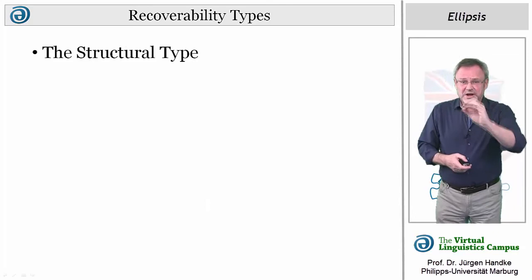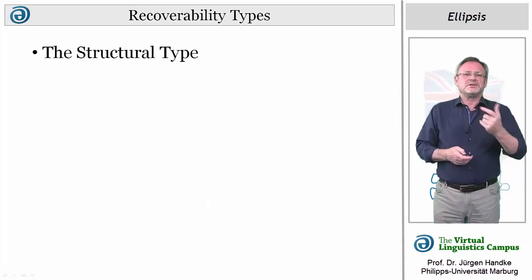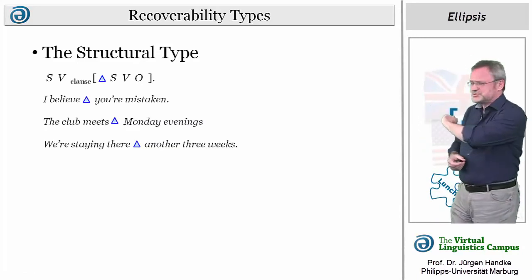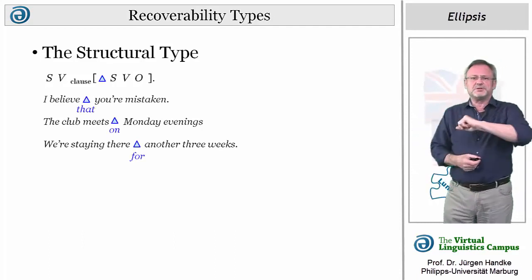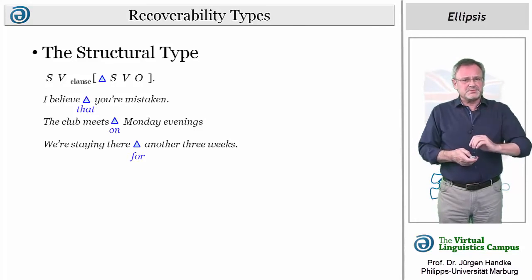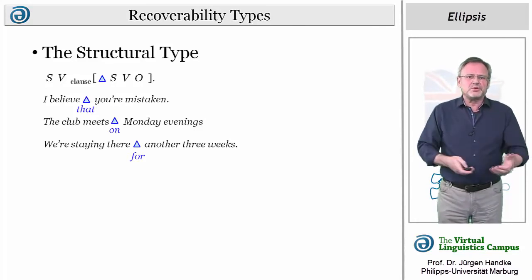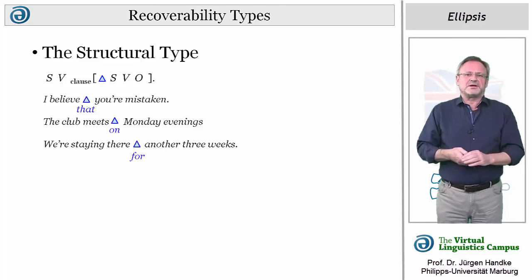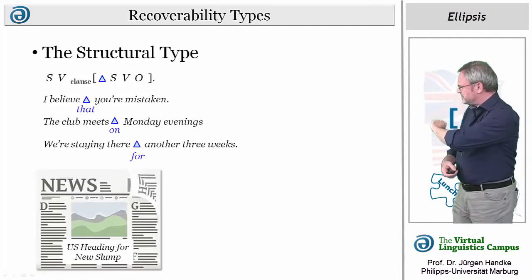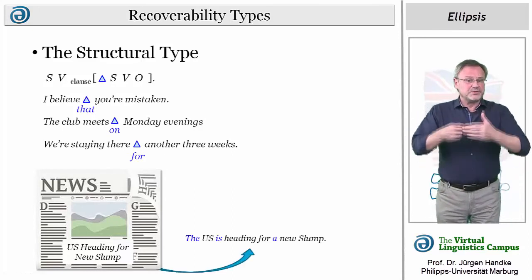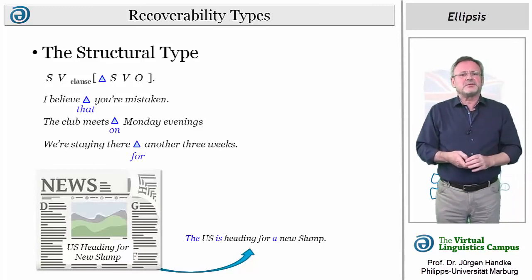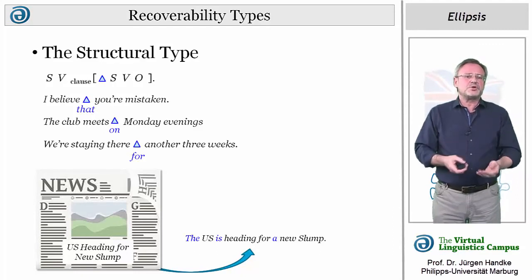In sentences with structural ellipsis, the third type, the interpretation depends on the knowledge of grammatical structure. Here are some examples where a conjunction or prepositions have been ellipsis'd and can be recovered without reference to any external context. Structural ellipsis often involves the omission of determiners, pronouns, operators, and other closed-class words in block language — for example, in book titles, notices, or headlines, as in this headline: 'US heading for new slump,' which stands for 'The US is heading for a new slump.' Note that often there are no clear-cut boundaries between structural ellipsis and instances of situational ellipsis.